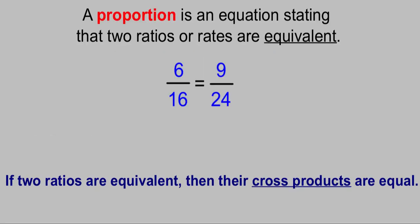First is some vocabulary. A proportion, and we talked about this a little bit in sixth grade, is an equation saying that two ratios or rates, think of them as kind of two fractions, are equivalent. They're equal to each other.